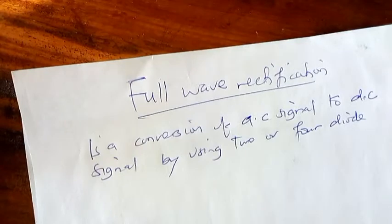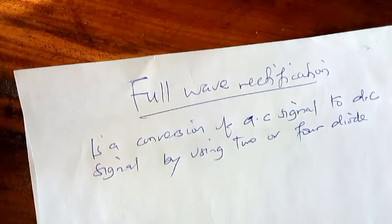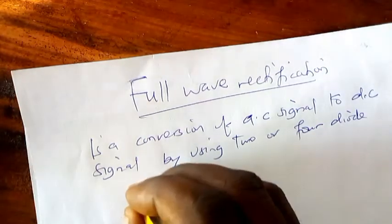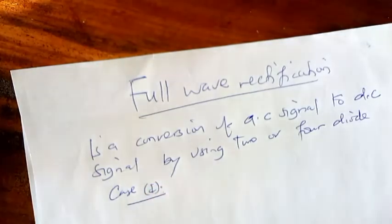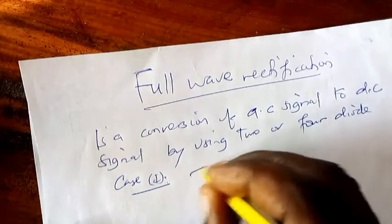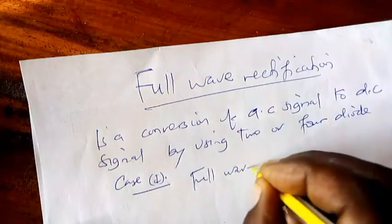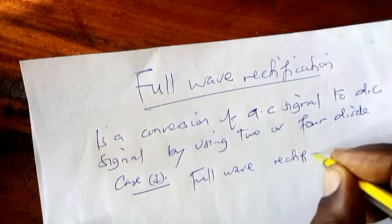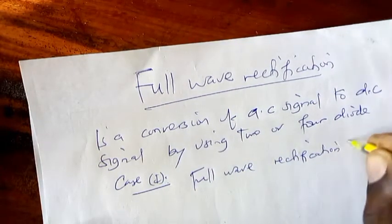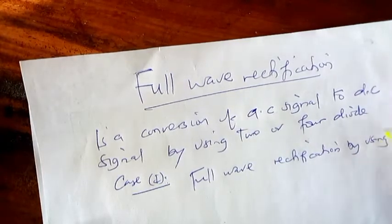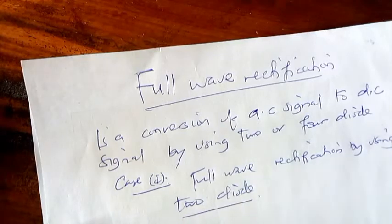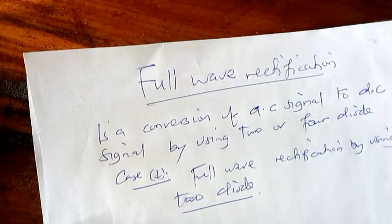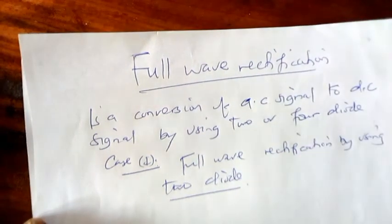Full wave rectification is being achieved by using two diode and four diode. So let us see case number one. Case number one, we're going to look at full wave rectification by using two diodes.